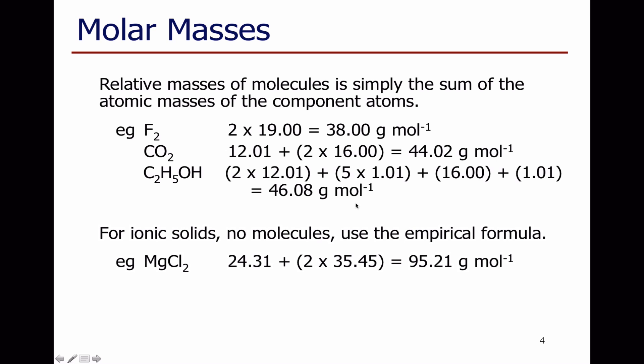If I have an ionic solid, I don't have molecules, and I just use the formula to work out the molar mass. So for magnesium chloride, MgCl₂: look up magnesium — 24.31 — two chlorines, 2 times 35.45, and I've got a total mass of 95.21 grams per mole.